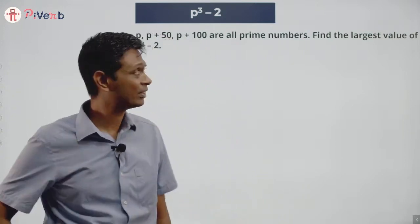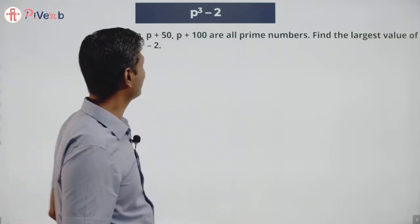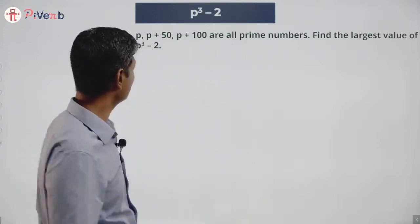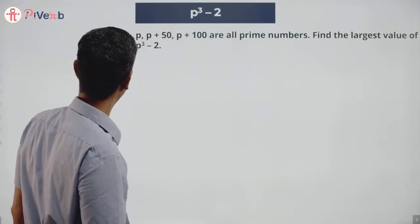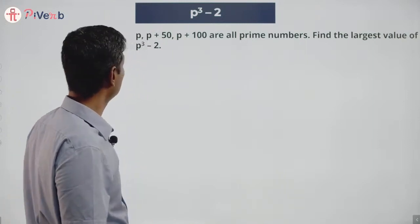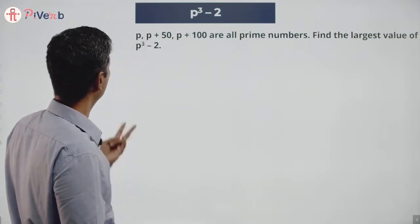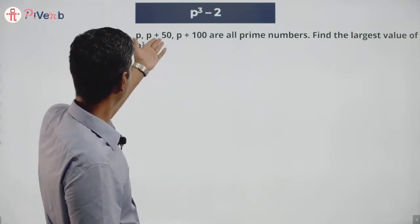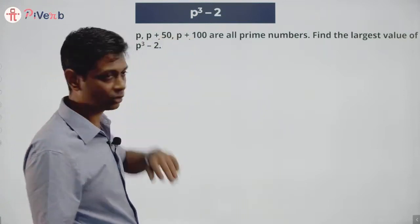Nice stuff, right? So let me do this. What we do usually — let us put some p is prime. p equal to 2 won't work: 2 plus 50 is not prime, 2 plus 100 is not prime.